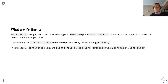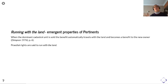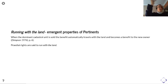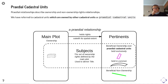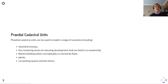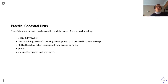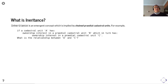Conceptually, the cadastral unit holds the right as a proxy for the owning parties. In simple terms, pertinence represents rights held by the land that benefit the owner of the land. This gives you the emergent property of pertinence running with the land: when a dominant cadastral unit — a flat — is sold, the benefit automatically travels with the land to the new owner, because that benefit is registered against the cadastral unit as a proxy for the true owner. Pradial rights are said to run with the land; where you have a pradial ownership right we refer to these as pradial cadastral units. These can be used to model a range of scenarios including shared driveways, remaining areas of a housing development, flatted building common areas, car parking spaces, and bin stores.